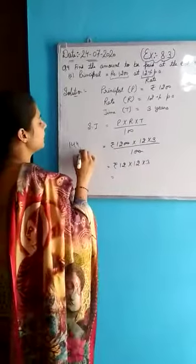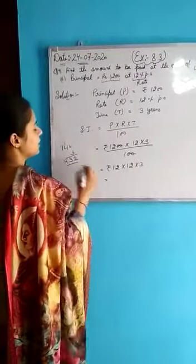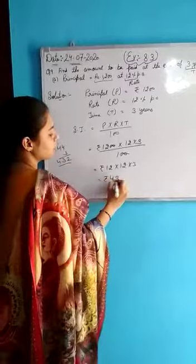And then you multiply it by 3. 3 times 4 is 12, 3 times 4 is 12 plus 1 is 13. It will come rupees 432.